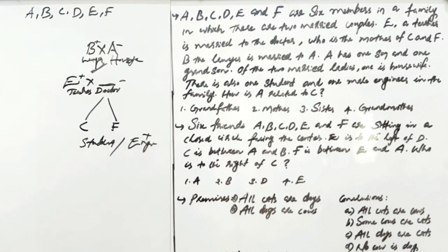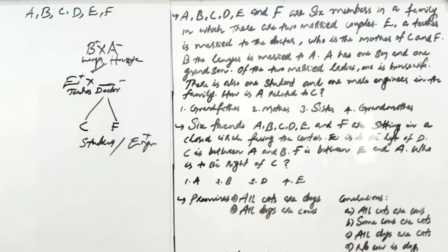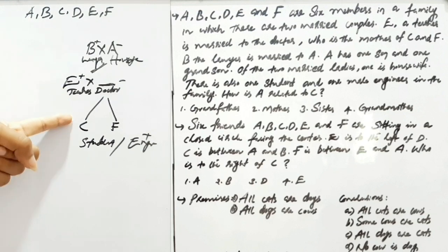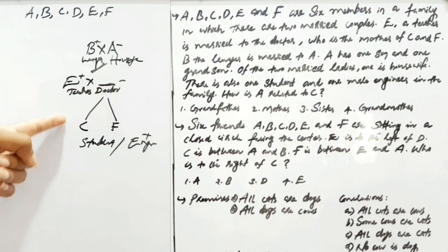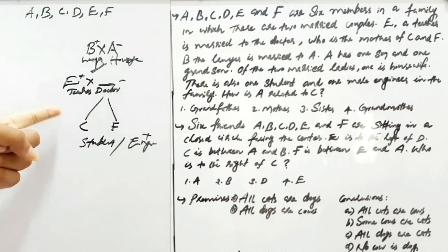Now, putting it together: A has one son and one grandson. A is therefore in the grandparent generation. You can confirm A does not satisfy the male engineer role. So, we can share this diagram. The question is: how is A related to C? A is a grandmother. C is related to A as grandmother.